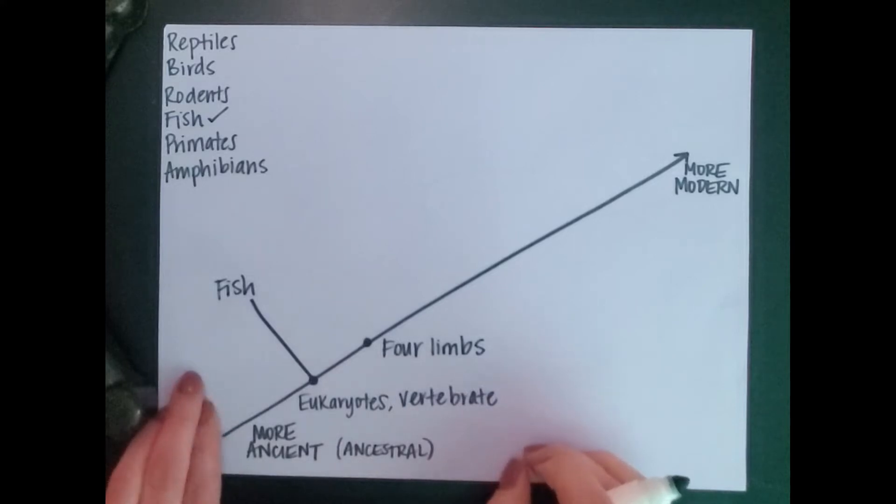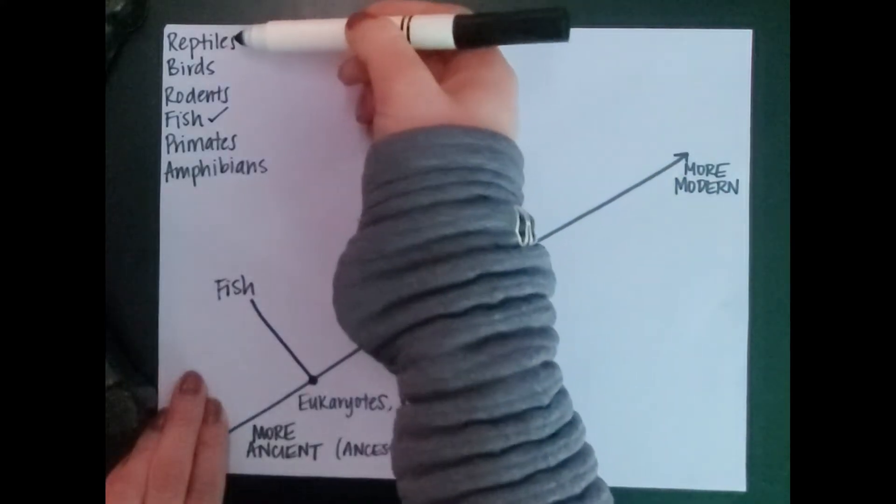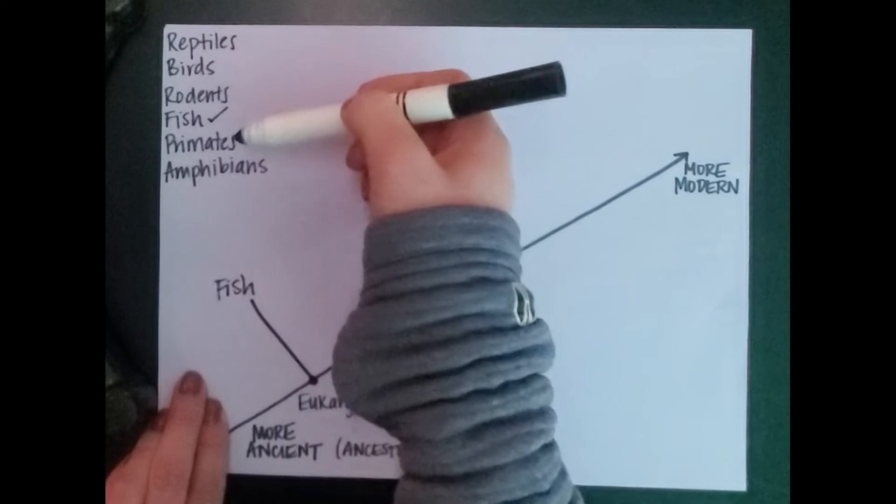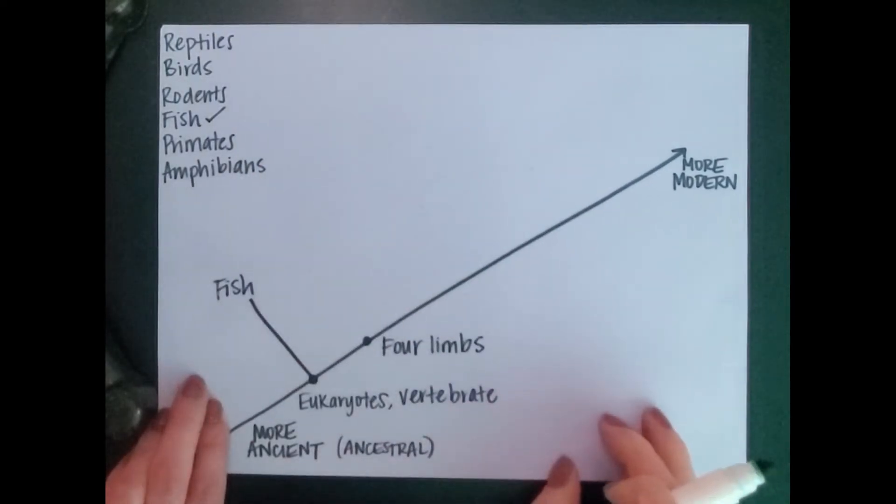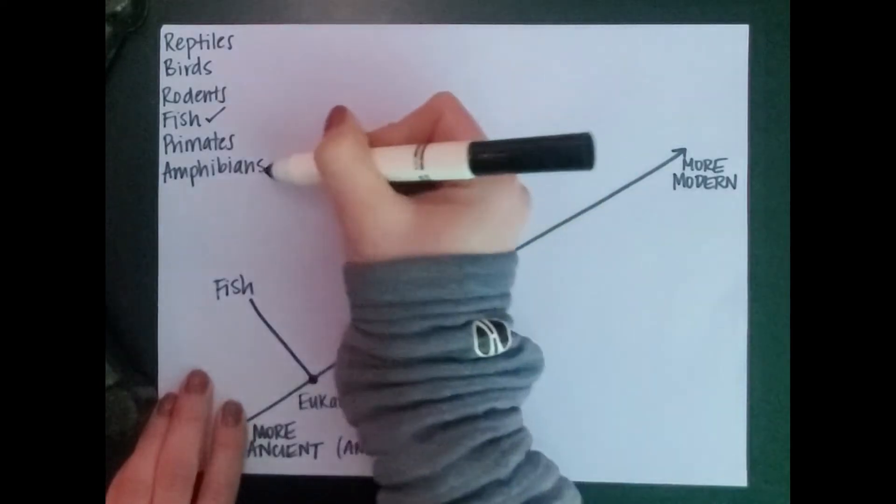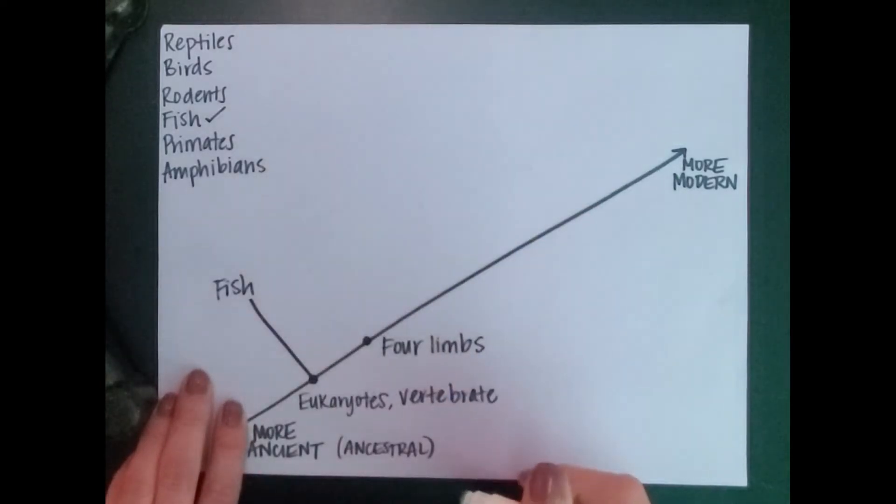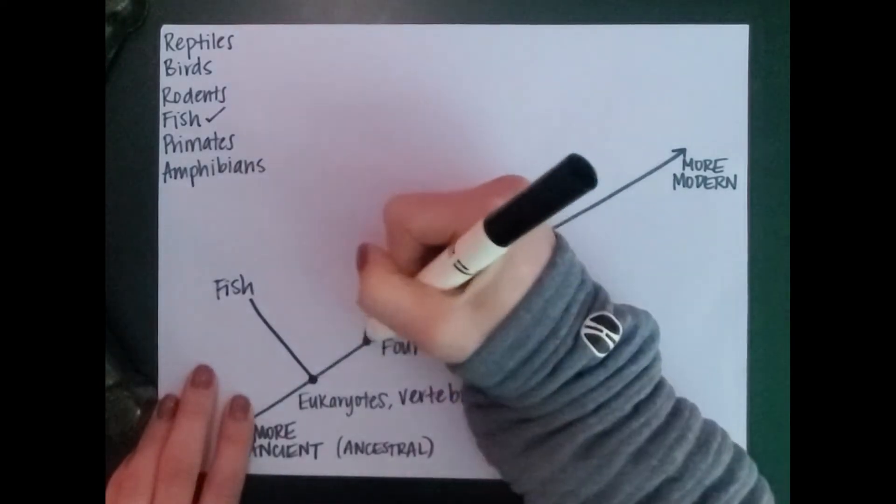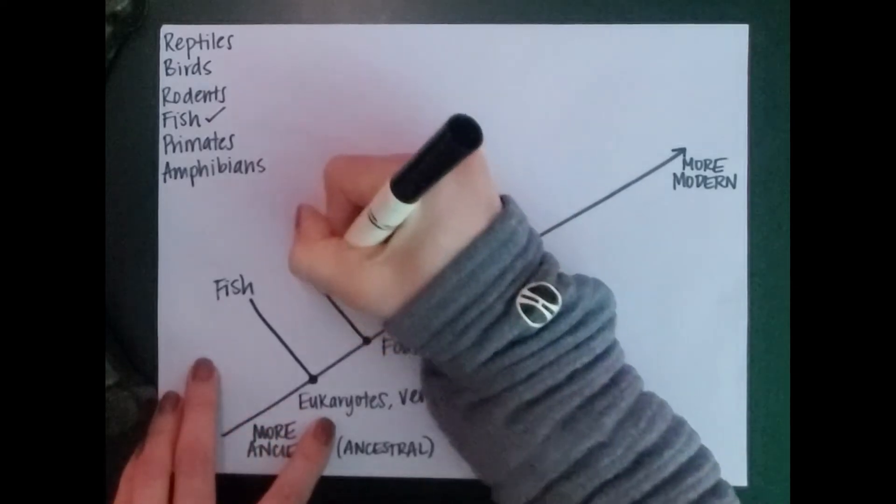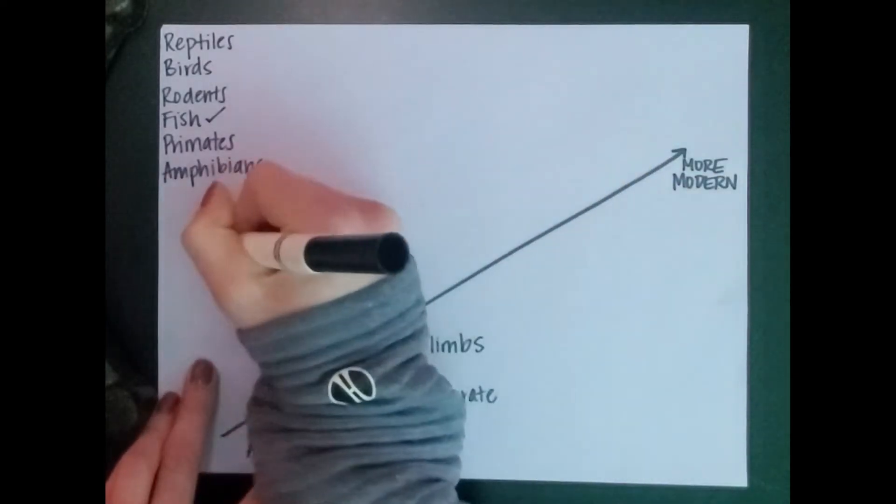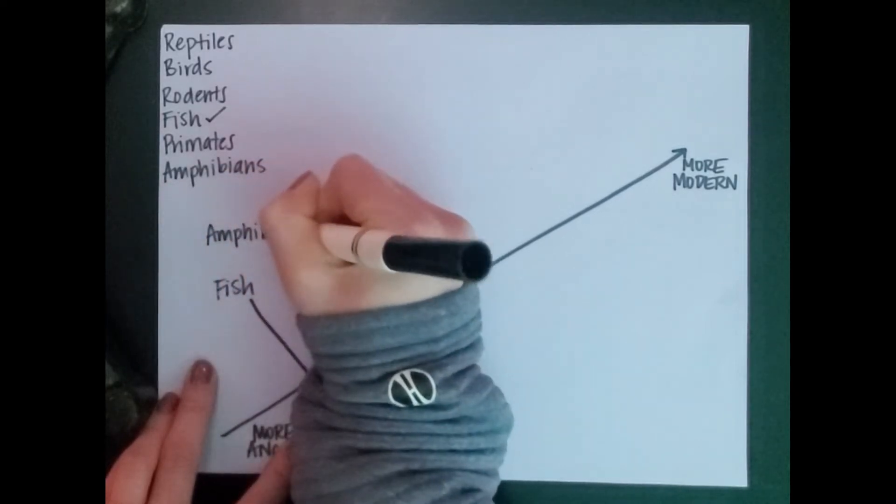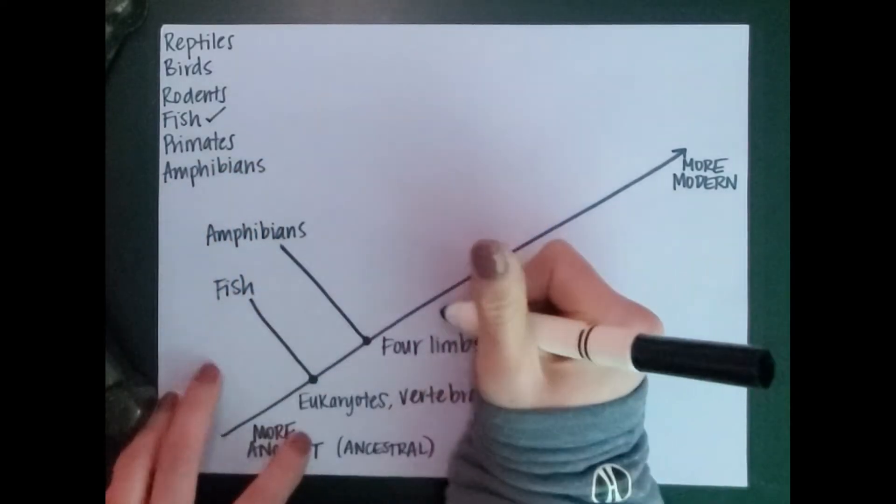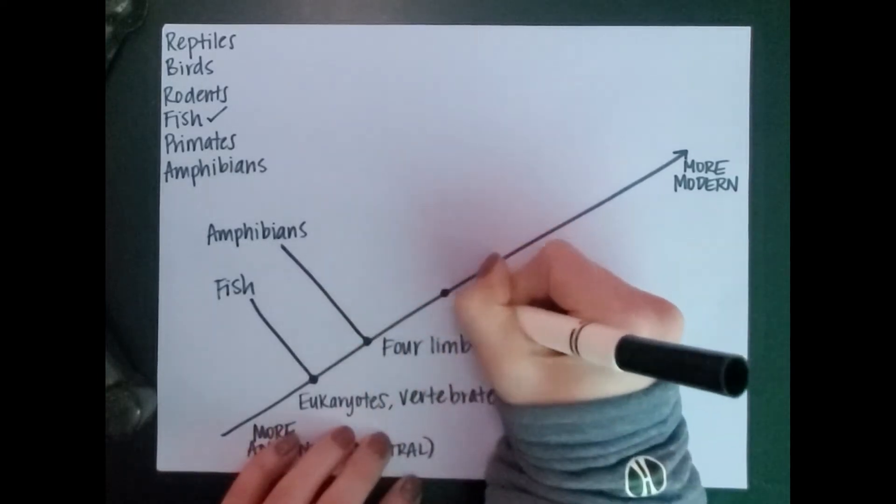Then from there, I think about what similarities I have between reptiles, birds, rodents, primates, and amphibians. Is there anything that can be left off here? And the answer is that amphibians do not have an amniotic egg. So I'm going to create a line here for amphibians, and then further on, I'm going to put amniotic egg.